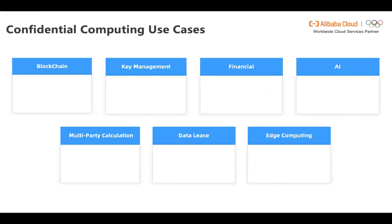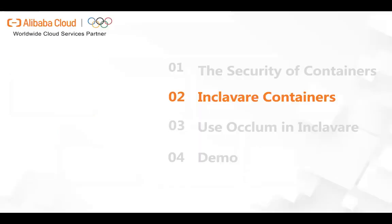Take multi-party computation as an example: different users or vendors share their data with each other in order to compute together, but they don't want to disclose their own data to each other. Confidential computing can protect the shared data running in the TEE, and the data is encrypted in memory to ensure that data will not be leaked or shared between parties. Confidential computing is going to be a key technology to help customers move their critical workloads with sensitive data to the cloud, and Enclave Containers aims to bring confidential computing into the container ecosystem to simplify deployment, delivery, and management of trusted applications.